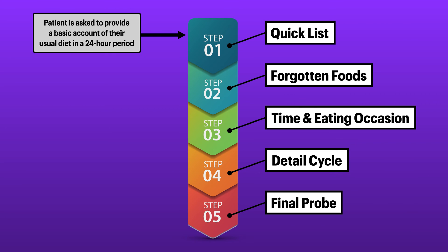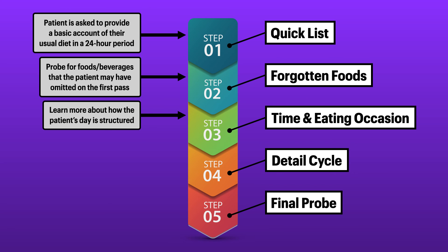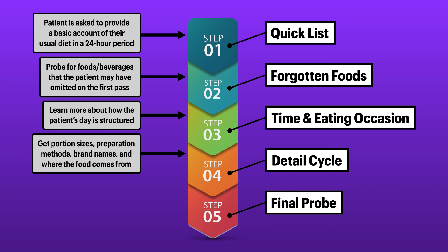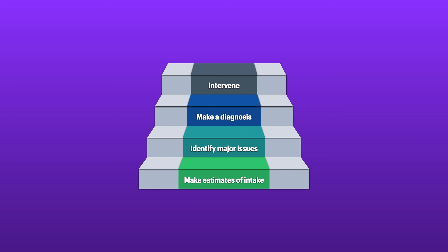For the 5-step multiple-pass method, you start by getting a basic account of the patient's usual diet in a 24-hour period. After that, you probe for foods and beverages that the patient may have omitted on the first pass. Then you learn more about how the patient's day is structured by attaching a time and title to each feeding session, get portion sizes, preparation methods, brand names, and where the food comes from, and review the recall once more to close any existing gaps. Finally, you ask the patient if there's anything else they'd like to add. When there's nothing left to add, the diet recall is complete and it can be used to make estimates of intake, identify major issues, make a diagnosis, and intervene.